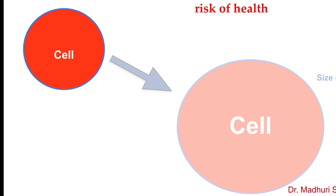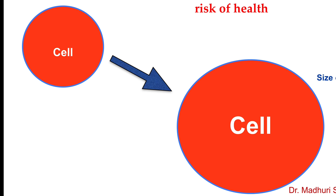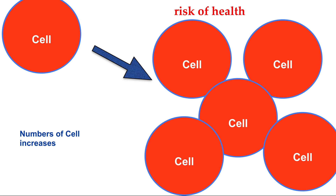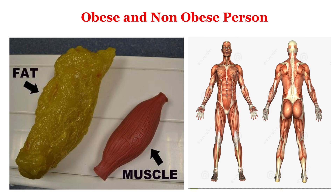How does obesity take place inside the body? Obesity takes place in two ways: either the size of the cell increases, or the number of cells increases. On screen you can see two pictures — one is fat and another is muscle. If you look at the fat, shown in yellow color, it looks out of shape or shapeless, whereas muscle looks very much toned and in shape.